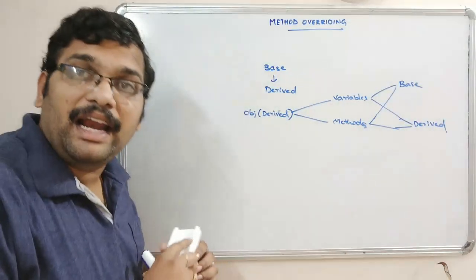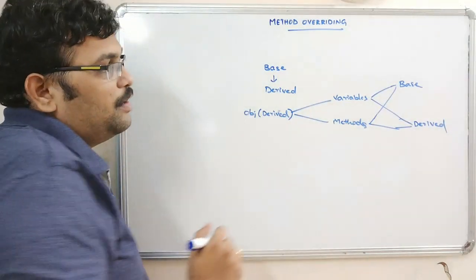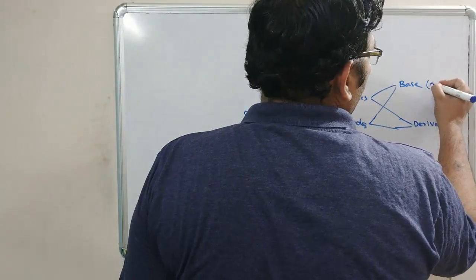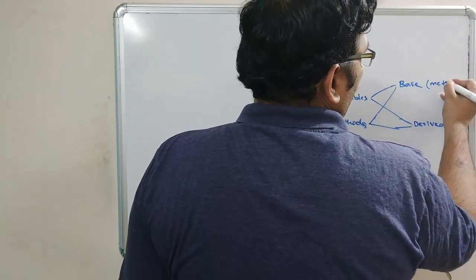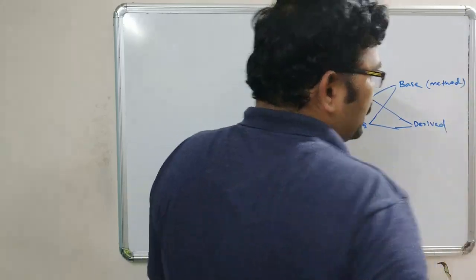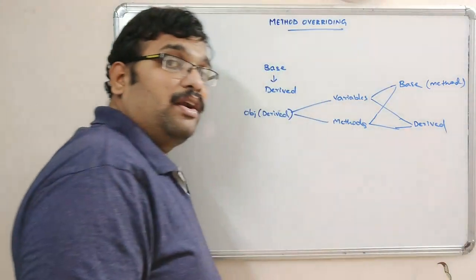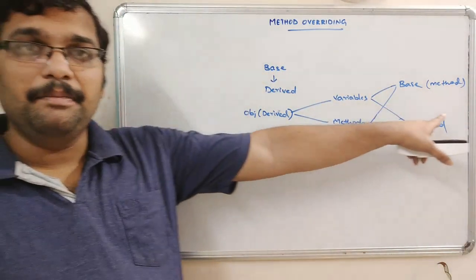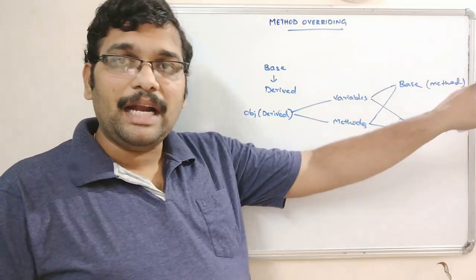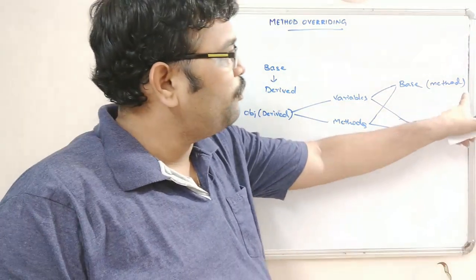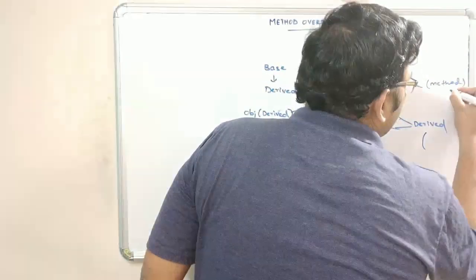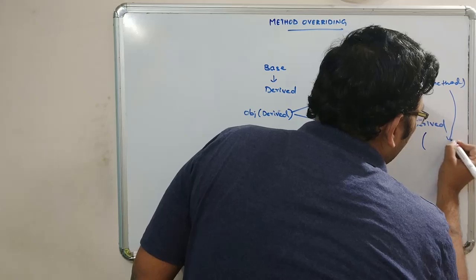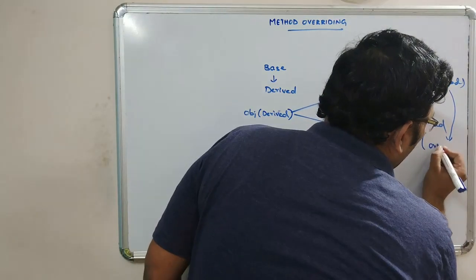In method overriding, we write a method in the base class, and whatever method we write in the base class, that method will be overridden in the derived class — the same method will be overridden.